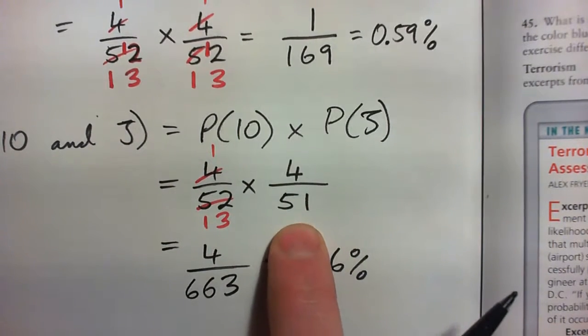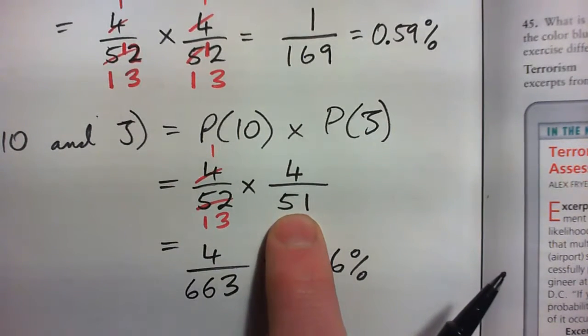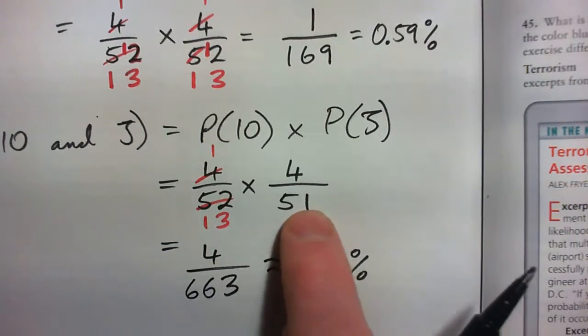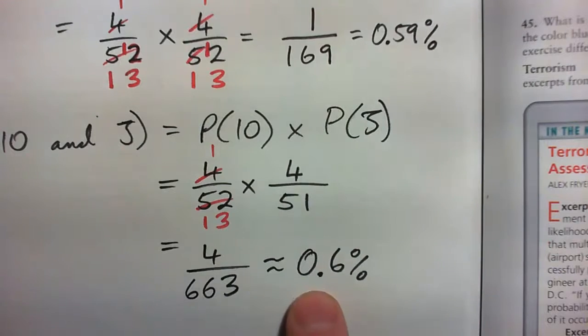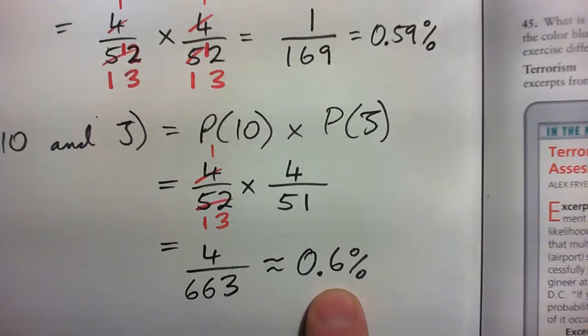When you did not put the card back in or the 10, then the next time you chose, you had actually more of a chance of getting the jack because it was only 51 cards to choose from instead of 52.